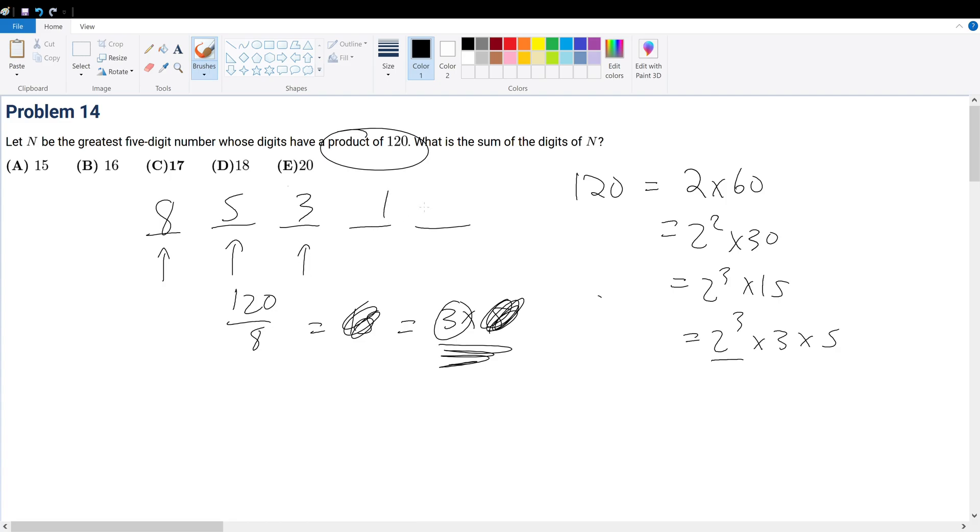The rest must be all ones, and we are done. What is 8 plus 5 plus 3 plus 1 plus 1? Well, that would be 16 plus 2 gives 18, bringing you to answer choice D.